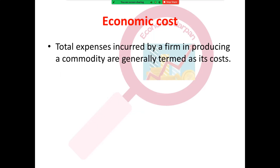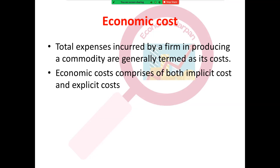Next is economic cost. Economic cost refers to the total expenses or total cost incurred by a producer in producing a commodity. In economic cost, both implicit cost and explicit cost are included. So explicit cost and implicit cost together are the parts of economic cost.